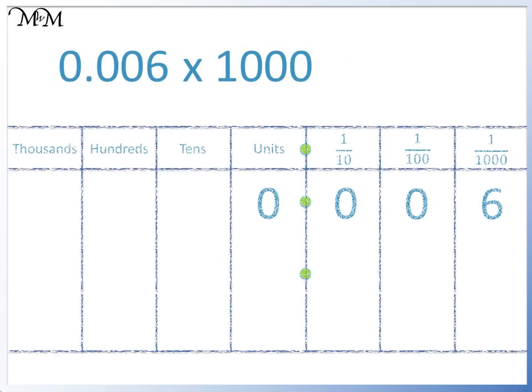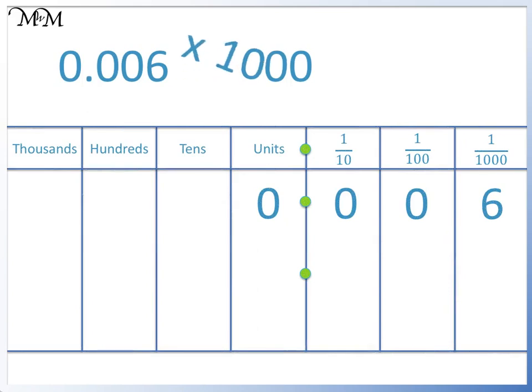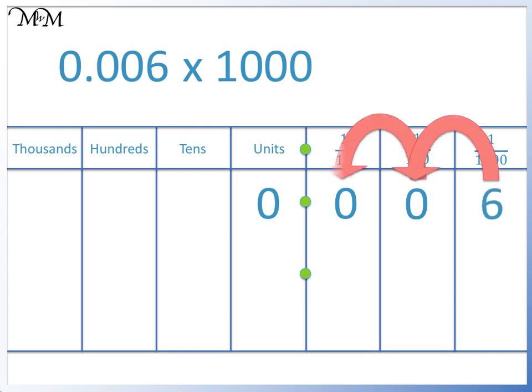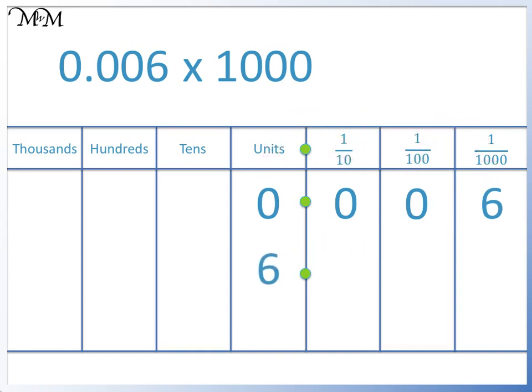0.006 times 1000. We are multiplying by 1000, so we will move the 6 three places to the left. 0.006 times 1000 equals 6.